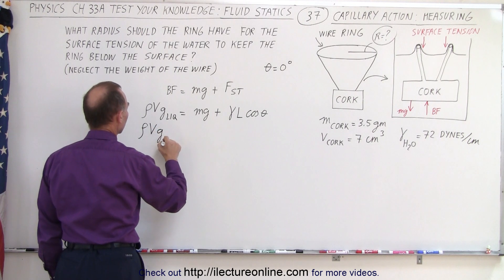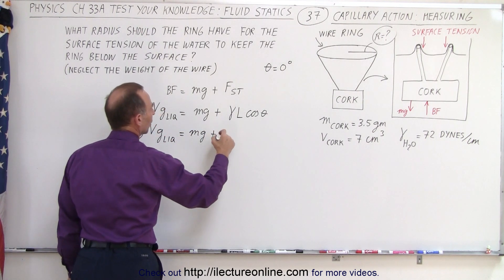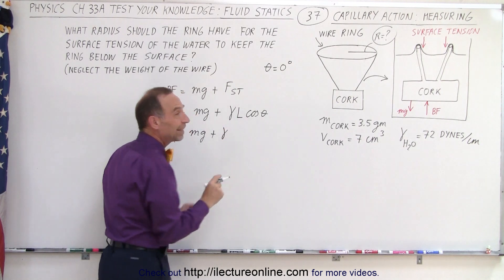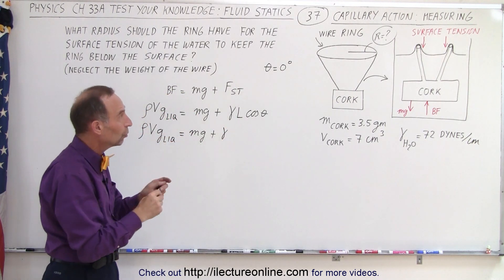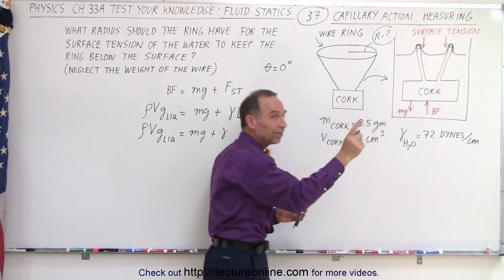...equals the weight of the cork plus the surface tension times the length of contact. But notice the wire has an inside contact and an outside contact.